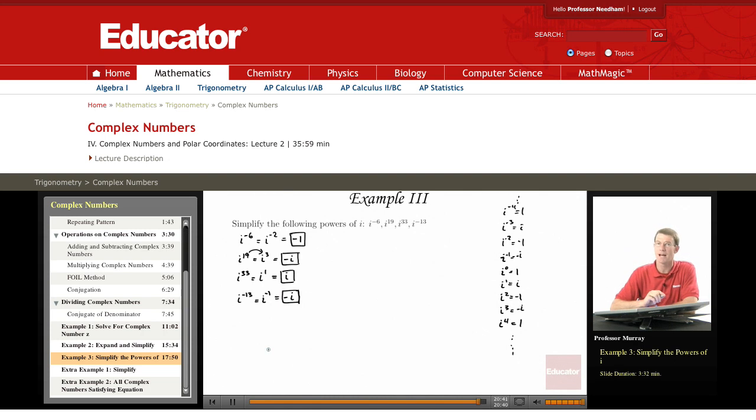Okay, so the way you simplify powers of i is you just remember that they go in cycles of 4, and so if you have a really big power of i, you just need to figure out what its remainder is when you divide by 4.